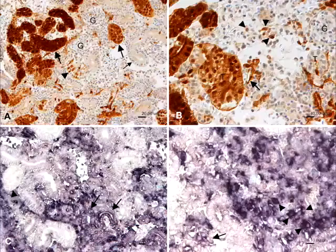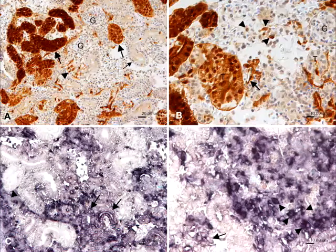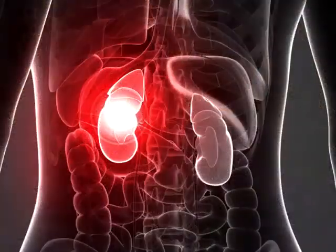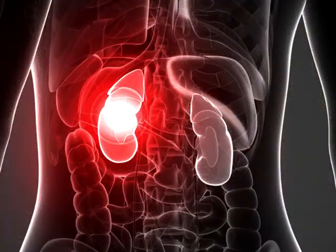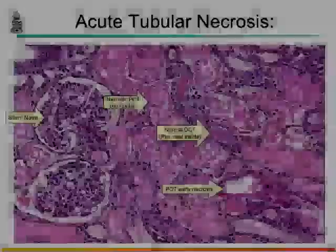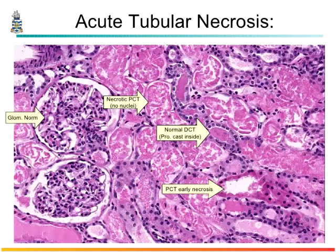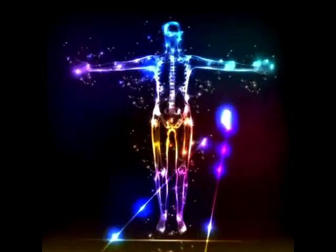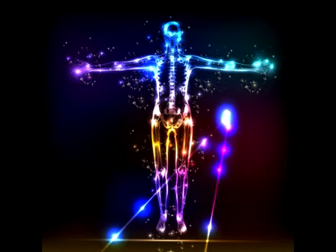Myoglobin is a large molecule, and as the kidneys filter plasma, myoglobin clogs renal tubules, leading to obstruction, tubular necrosis, and acute renal failure. Furthermore, alterations in electrolyte balance can occur — particularly elevated potassium and phosphate levels, and decreased calcium being the most common. Lactate is also often elevated.